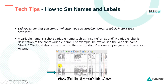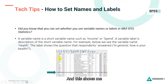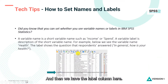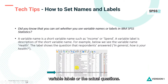I'm in the variable view and you can see I've got the name column, which shows the short variable names. Then we have the label column, which shows me the longer variable labels or the actual questions.